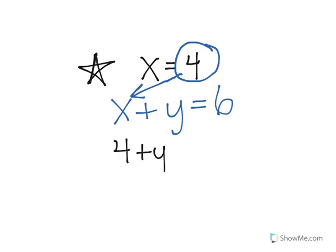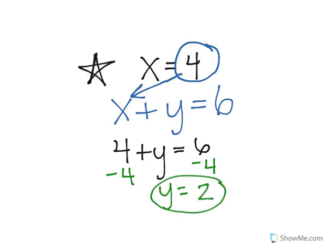So 4 plus y equals 6. Subtract 4 from both sides, y equals 2. That means that if I were to stick y into this equation, which is 2, 4 plus 2 is going to equal 6. This is finding two numbers that make both of these equations true when you plug them in.